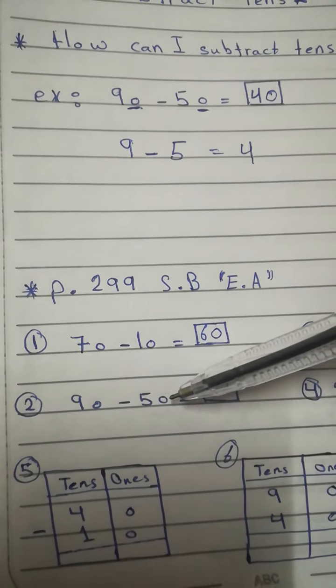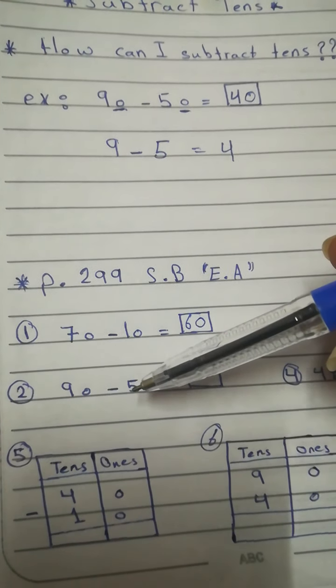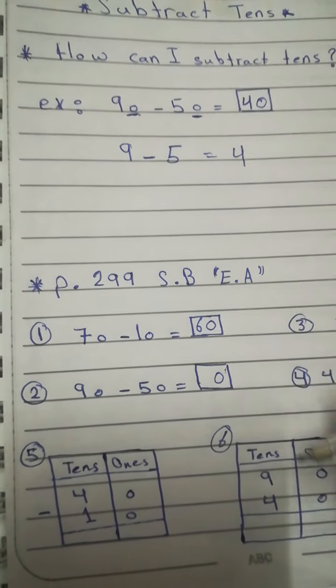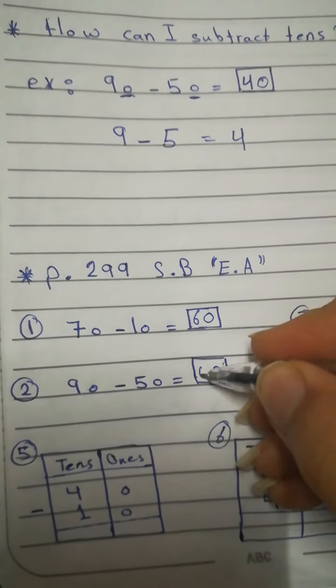90 minus 50. From the ones, 0 minus 0 is 0. 9 minus 5 is 4.